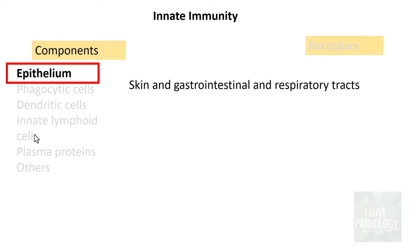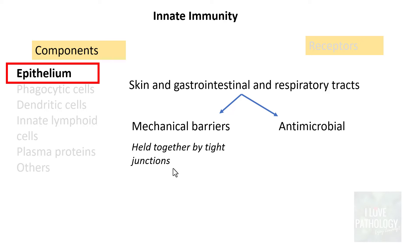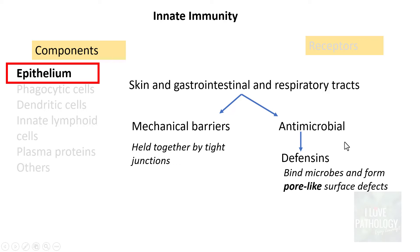The first component is epithelium. The epithelium of the skin, the gastrointestinal tract, and the respiratory tract all act either as mechanical barriers or as antimicrobials. They act as mechanical barriers because epithelial cells are held together by tight junctions. They act as antimicrobials by secreting substances called defensins, which bind to various microbes, form pore-like surface defects, and kill those microbes.